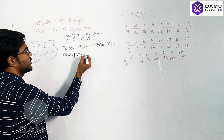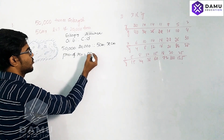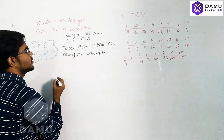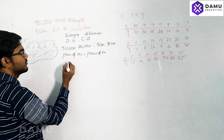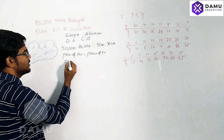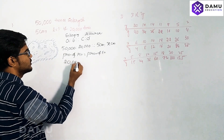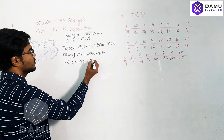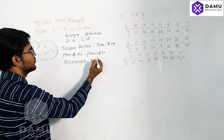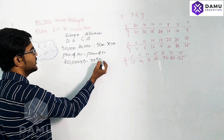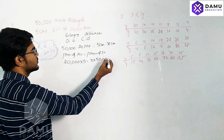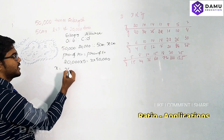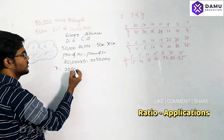For 20,000 times enlargement, the attained length we'll take as x centimeters. The product of means will be equal to the product of extremes. So product of means: 20,000 into 5, equals x into 50,000. Therefore x equals 20,000 into 5 divided by 50,000.